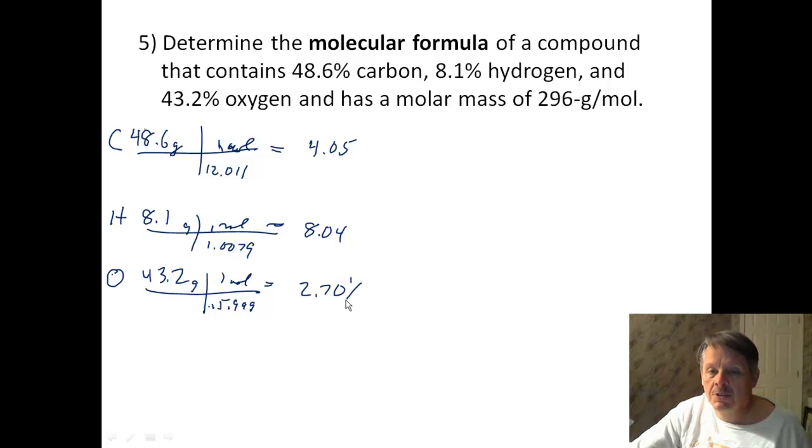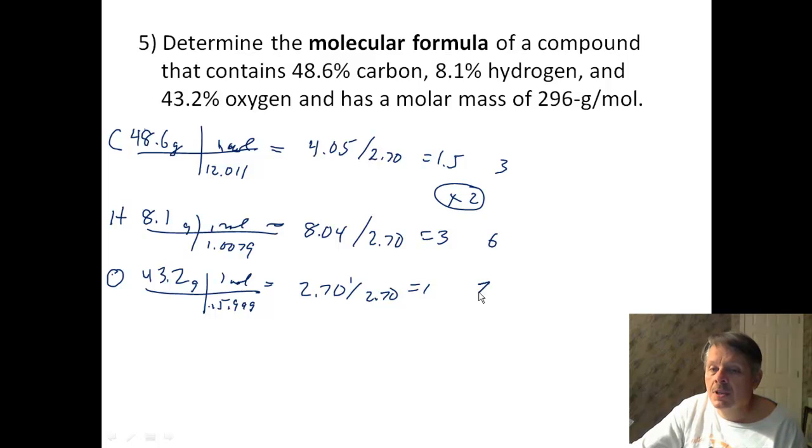Let's divide them all by 2.70 because that's the smallest. Clearly, this one gives us 1, this one gives us 3, and this one gives us 1.5. Well, if we have 1.5, we have to double everything. So we're going to multiply everything by 2. And that will make this one 3, and this one 6, and this one 2. So, that is our empirical formula. My empirical formula is C3H6O2.